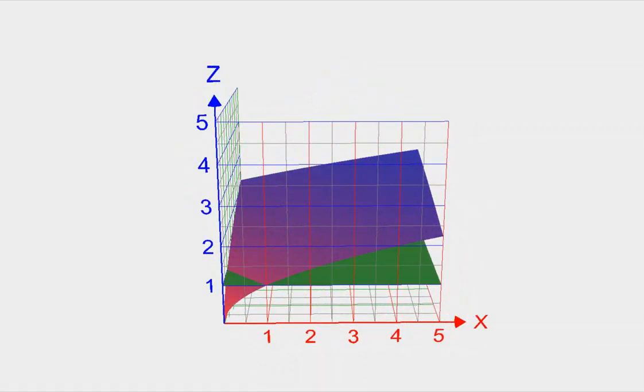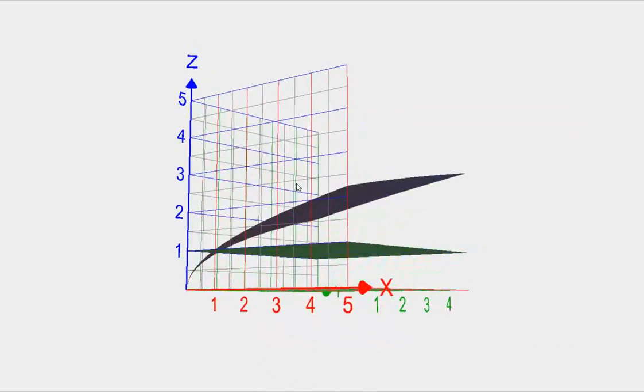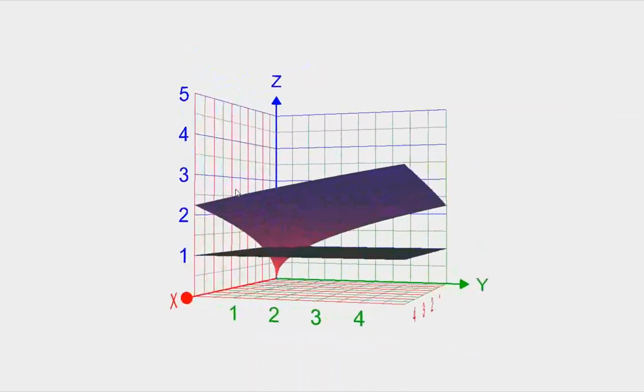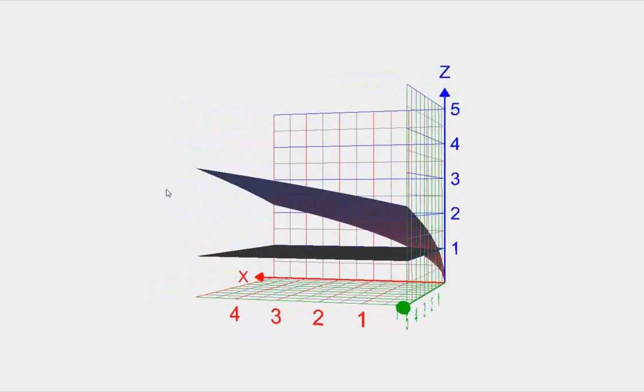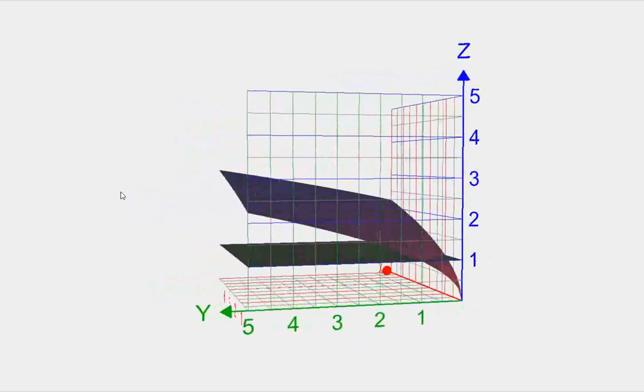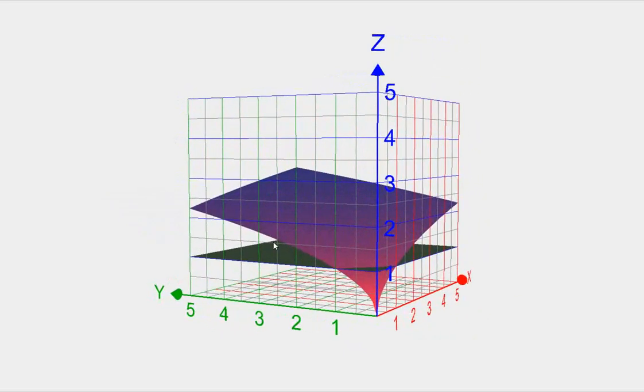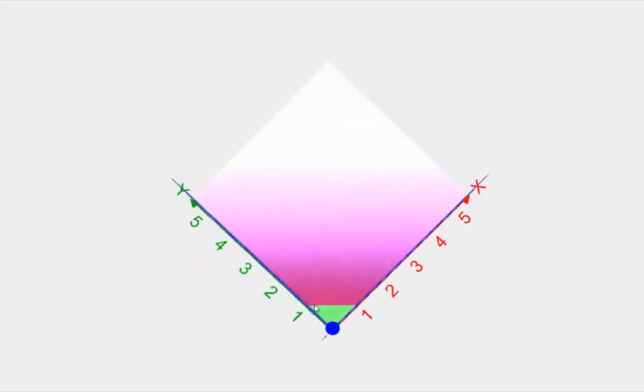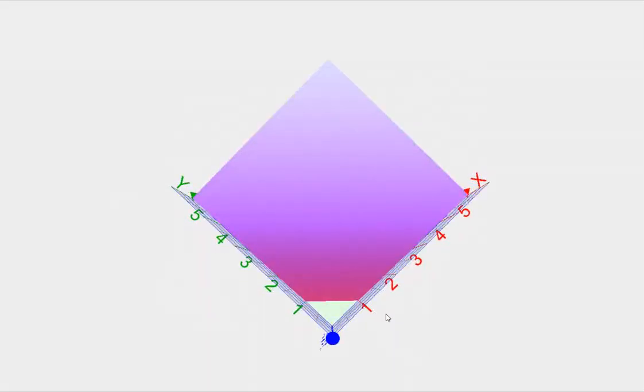First indifference curve to show, utility equals 1. The intersection of those two surfaces is every point, every pair of x and y that gives the same utility, utility equals 1. And it's that, a perfectly straight line.